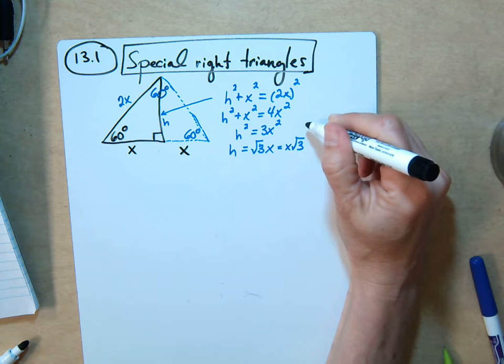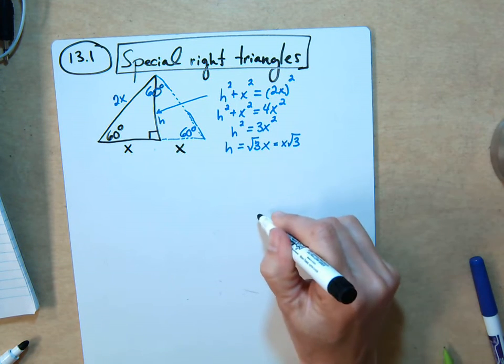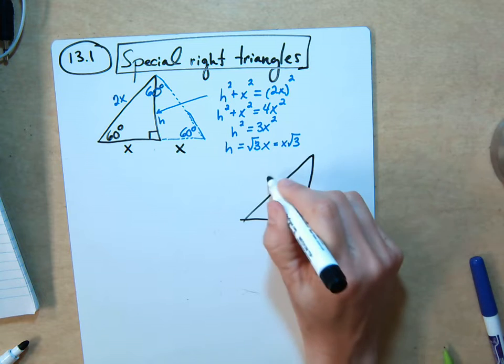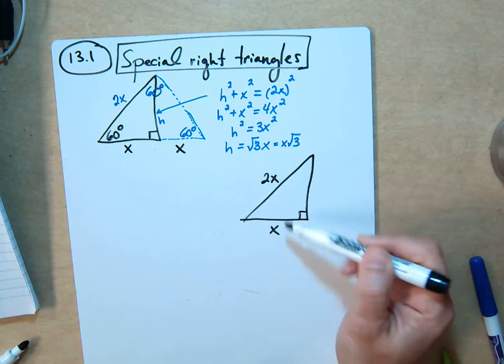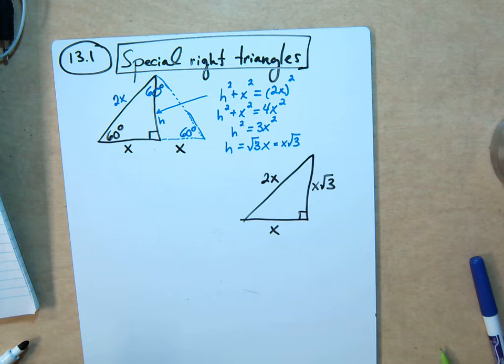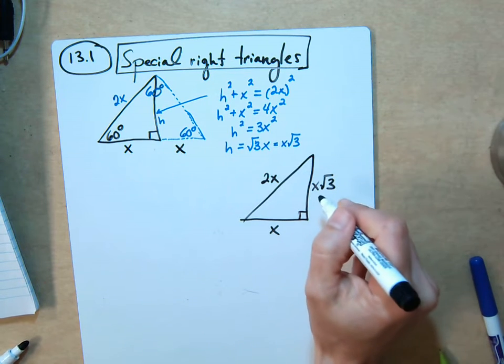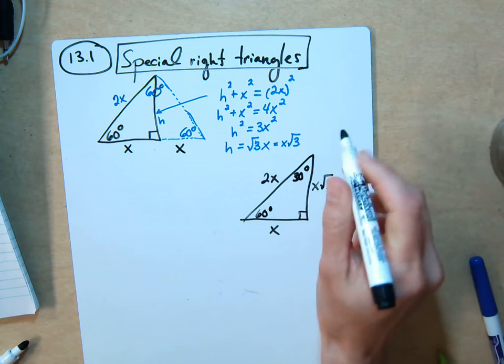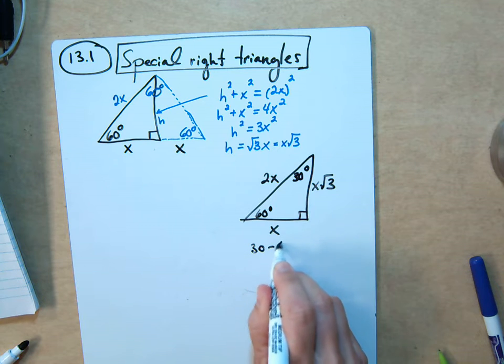So now we understand where it comes from. You don't necessarily have to memorize it if you just derive it again. So the final formula for a 30, 60, 90, I'll put it right here, is this. This is the only half that we see. This is 2x. The relationship is always, the hypotenuse is twice the shorter leg. And the longer leg is x root 3. There's always that relationship between the side lengths. And therefore, if I take the sine or cosine of 30 degrees or 60 degrees, it's always going to give me the same answer. Because the relationship between the sides is going to be the same. So this is your 30, 60, 90.